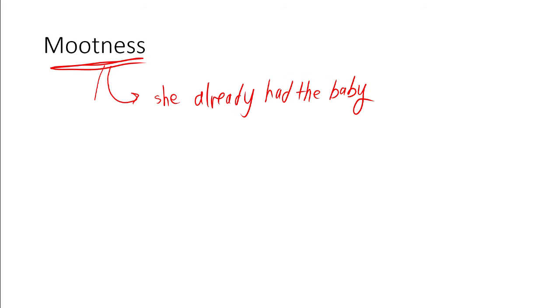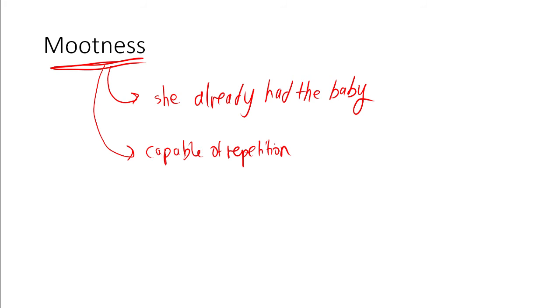So the court made an exception to that rule and said the issue was capable of repetition: by the time a woman's pregnancy reached the court, it would always be too late. So it was important that they make a decision.